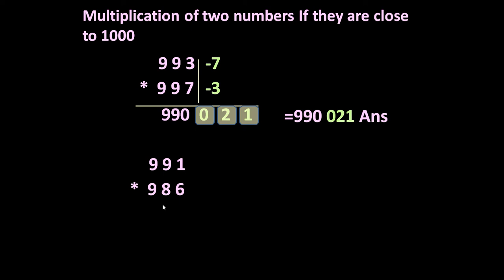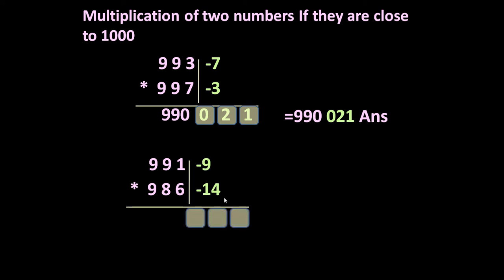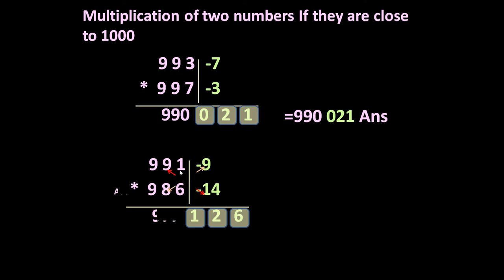Let us try 991 multiplied by 986. It is minus 14 (14 short of 1000) and minus 9 (9 short of 1000). For the last three digits, multiply 14 and 9 to get 126 — minus times minus is plus, so 126 fills all three spaces. For the first digits, cross addition: 991 minus 14 is 977, or 986 minus 9 is 977. So the answer is 977 126.